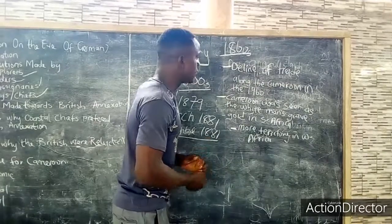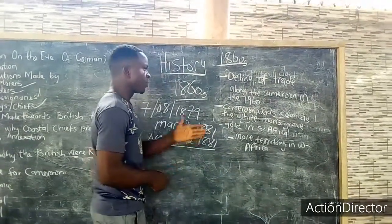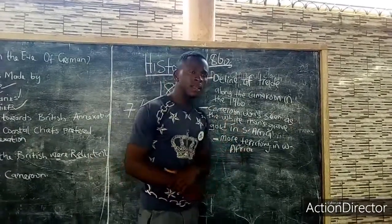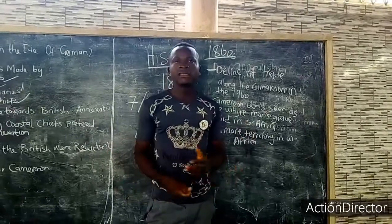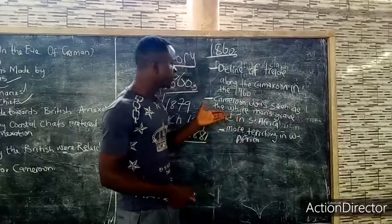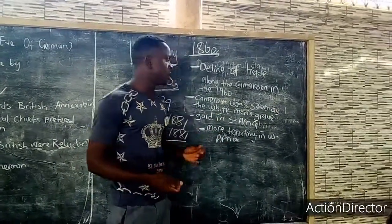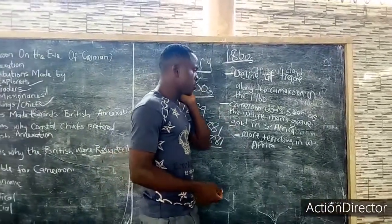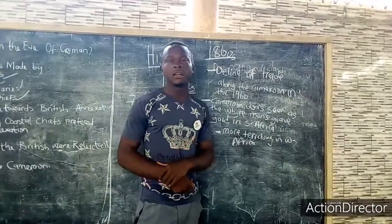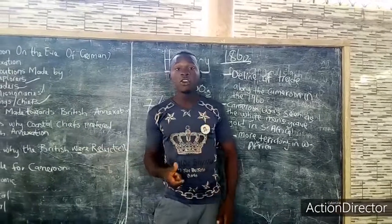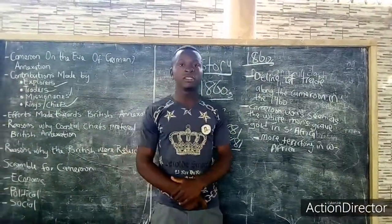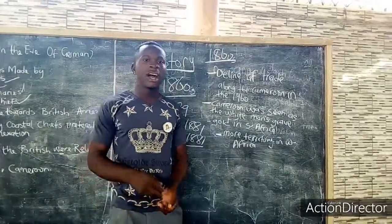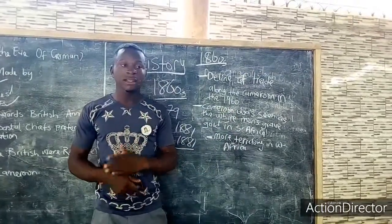Another reason was that Cameroon was seen as a white man's grave. Cameroon had so many diseases which could kill white men — diseases like malaria, chicken pox and others. This also discouraged the British from coming to the coast of Cameroon. Another reason was the discovery of gold in South Africa. This discovery contributed much to the reluctance of the British to annex Cameroon territory. When the British discovered gold in South Africa, they had more interest in that gold than in the Cameroon territory.